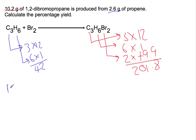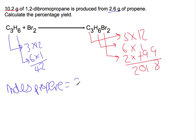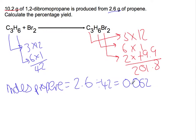The first thing we're going to do is calculate the moles of propene that we've used. Moles of propene is going to be the mass of propene divided by the gram formula mass, to give you 0.062.